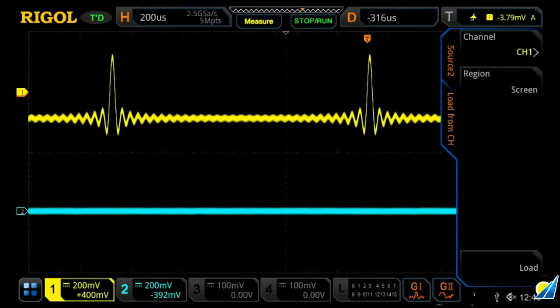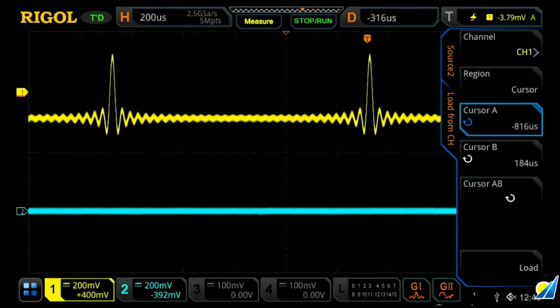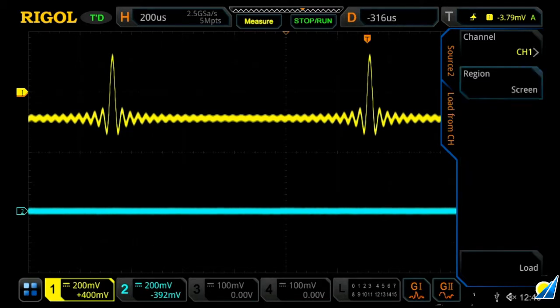So let's load channel one onto channel two. Load the sync function in yellow onto channel two in blue. And then we can choose either screen or cursor data. So let's choose, let's go with cursor.